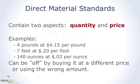Here are some examples. 4 pounds of the ingredient at $4.15 per pound — 4 pounds is the quantity and $4.15 is the price per pound we expect in the standard. 7 feet at 20 cents per foot. 140 ounces at 2 cents per ounce. Each of the standards has a quantity and a price element.